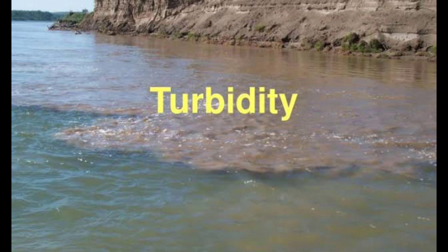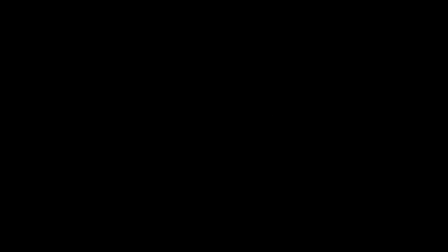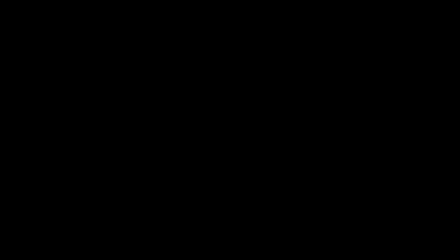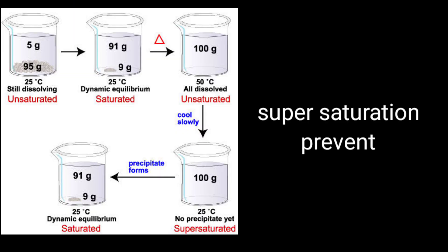In this solution, a turbidity is formed. The standard solution is formed. In this equation, HCl or Hydrochloric Acid is used to acidify the solution. The supersaturation is formed. This is the Limit Test for Sulphate.